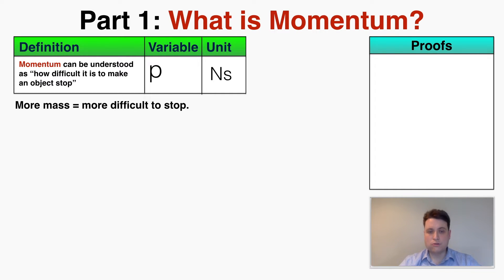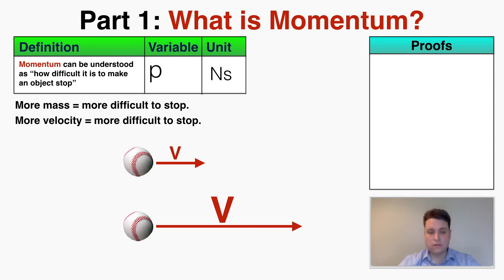We can also imagine two baseballs of the same mass, but one is moving a lot faster than the other. In this case the faster ball would probably be more difficult to stop. It would take more effort to stop a very fast moving ball than a slow moving ball. So it seems like the more velocity something has, the more momentum it should have as well, and this is reflected in the equation for momentum.